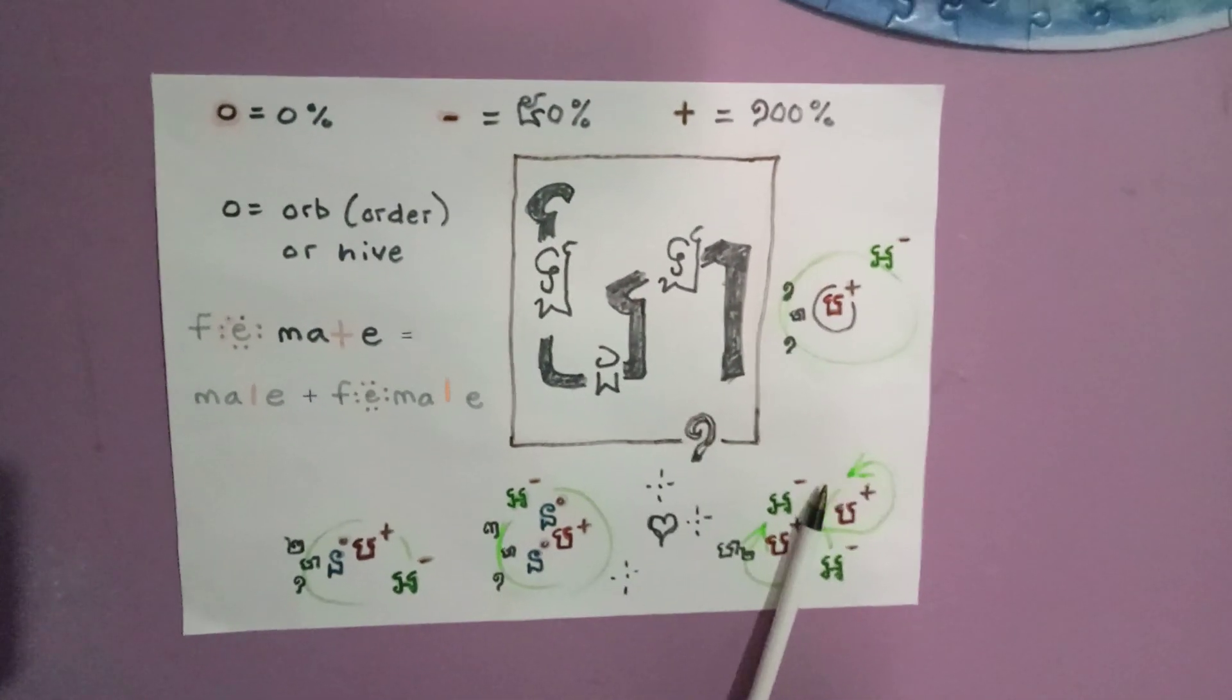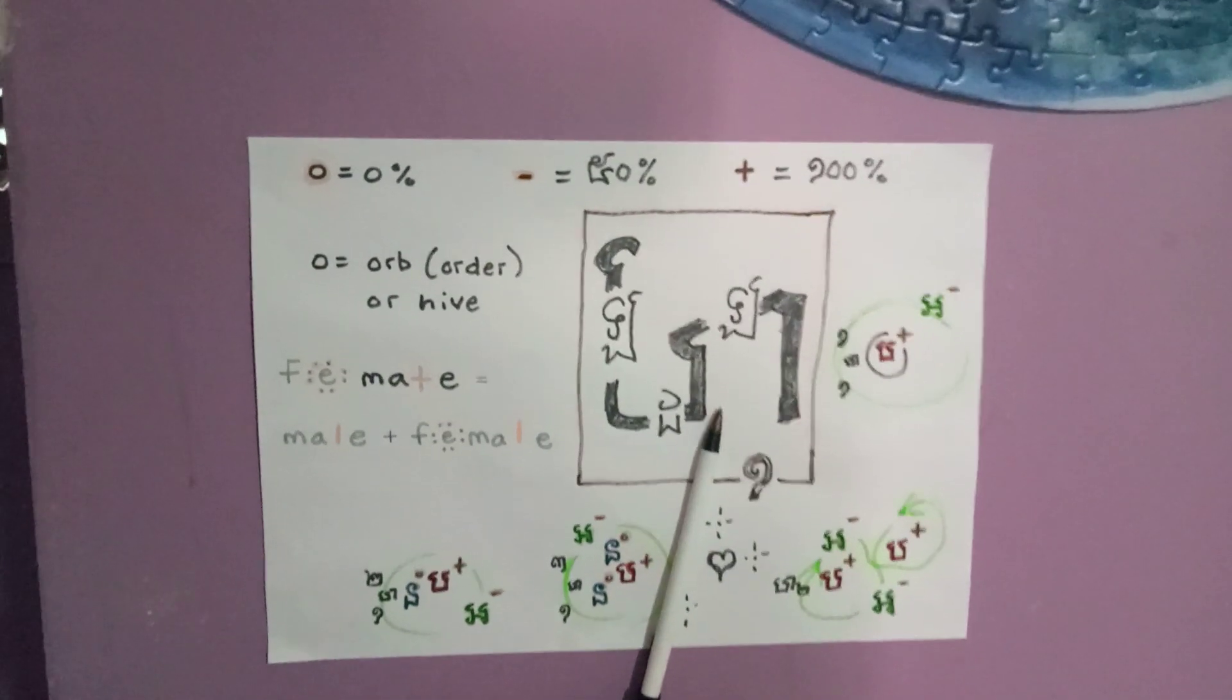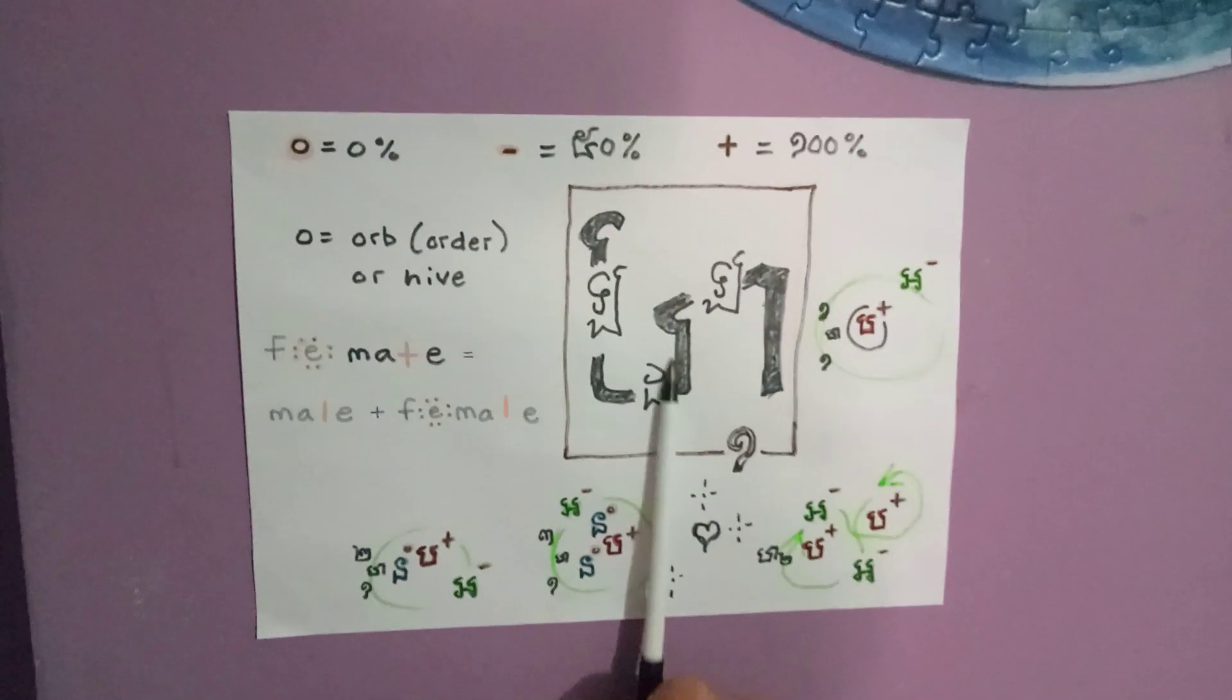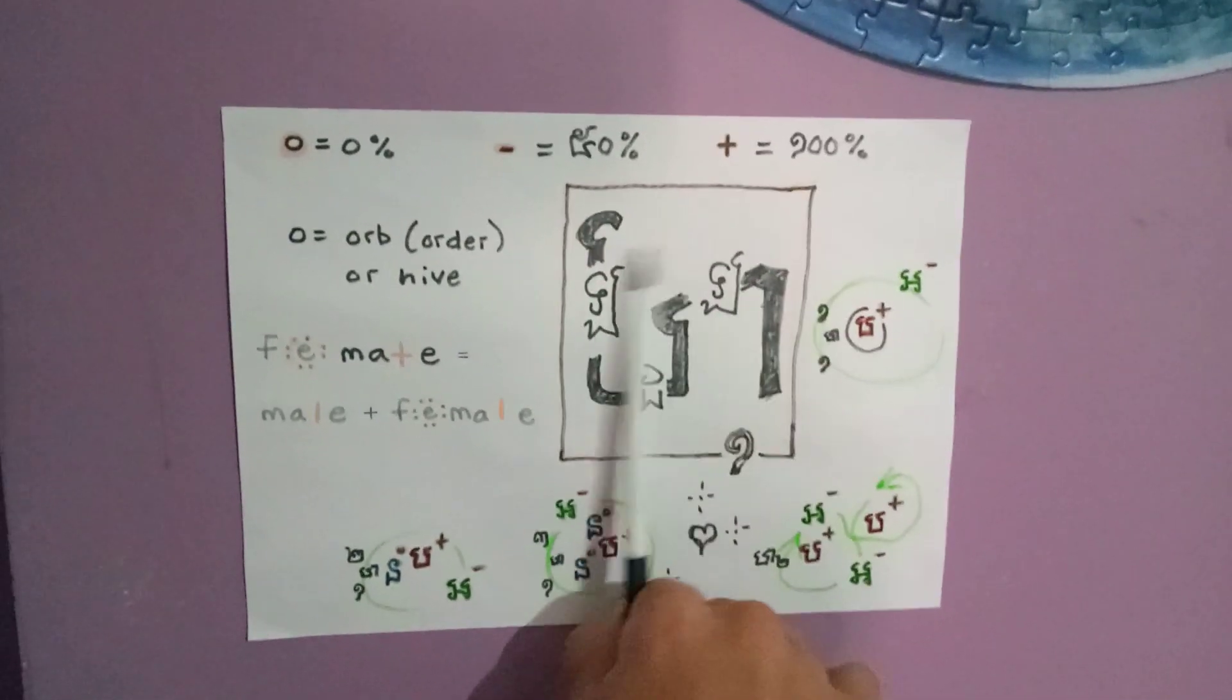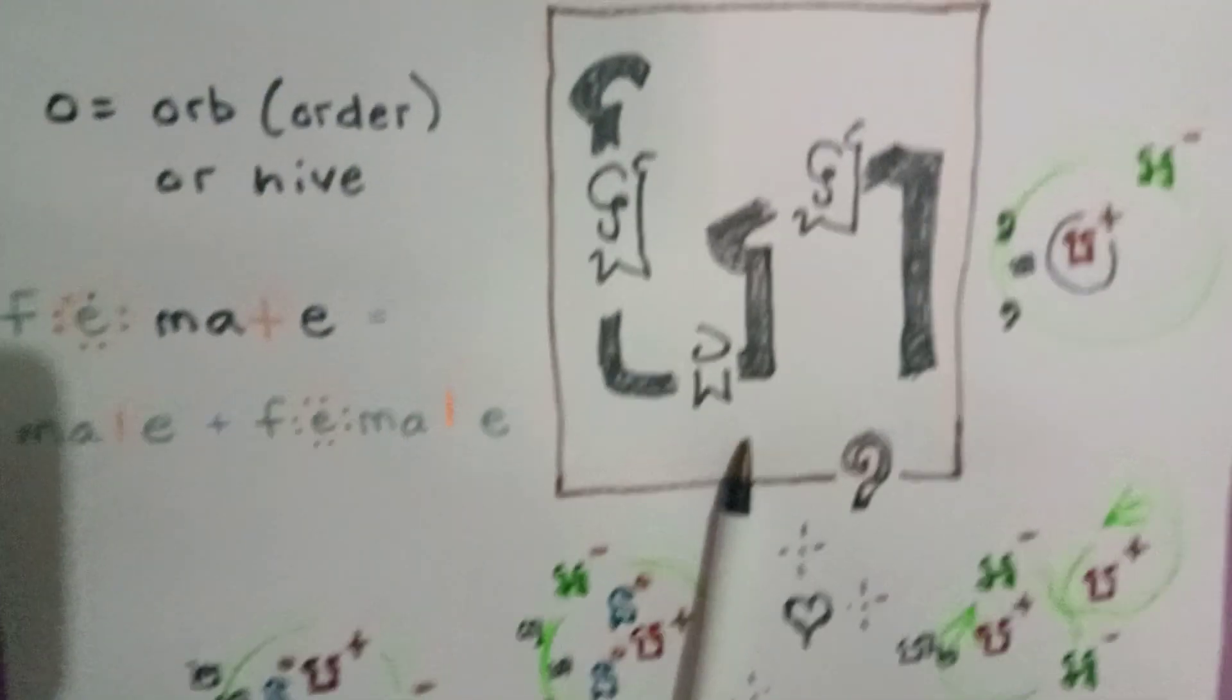Covalent bond. Talk about ionic bonds later. First, anyway. Proton. Up quarks to one down quark. Atomic mass.